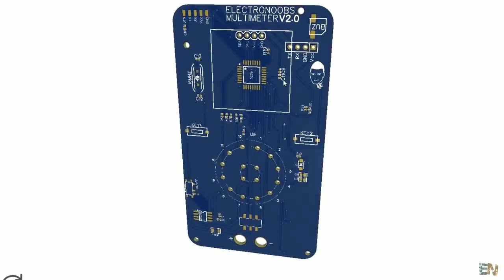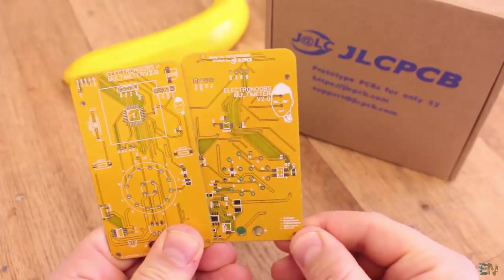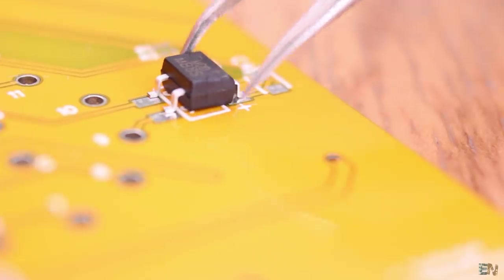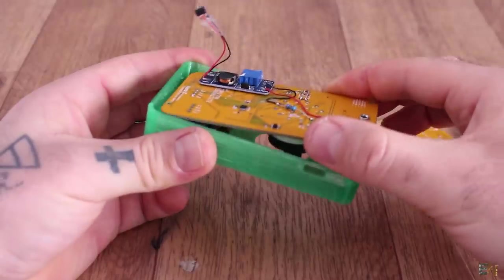The process to order a PCB is very easy. I received the boards in Spain in around 7 days. After I mounted all the components, I had my homemade Arduino-based multimeter, so let's see the modes.